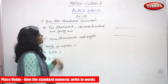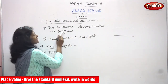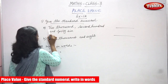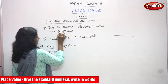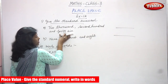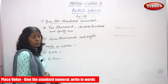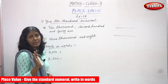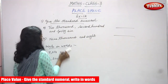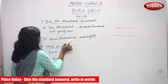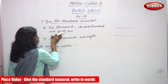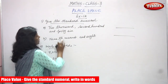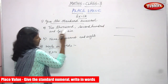Now we are going to see 'give the standard numeral,' that means the words are given. You are going to write in numeral form. So what is this? It is 2746, written in words, but you have to write it in numeral form. That is what 'give the standard numeral' means. Both sums are like this — the question is in word form and you have to write it as a numeral.